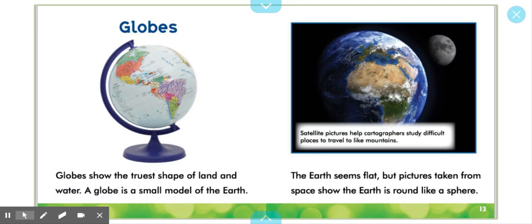Globes. Globes show the truest shape of land and water. A globe is a small model of the Earth. Satellite pictures help cartographers study difficult places to travel like mountains.